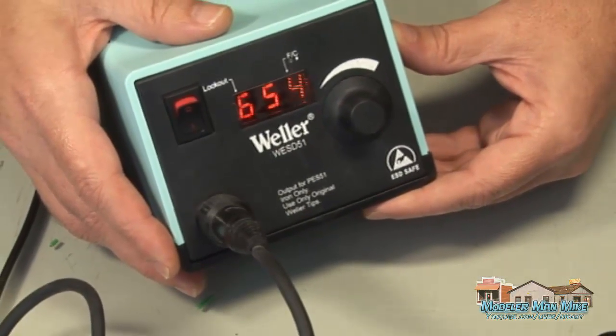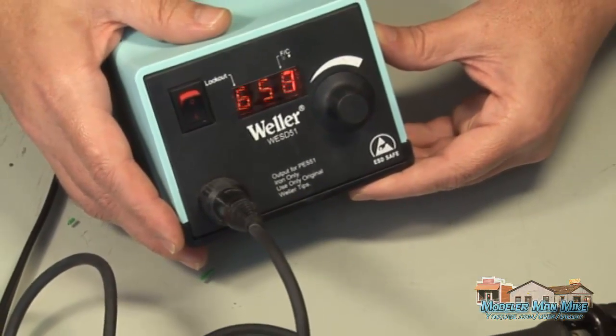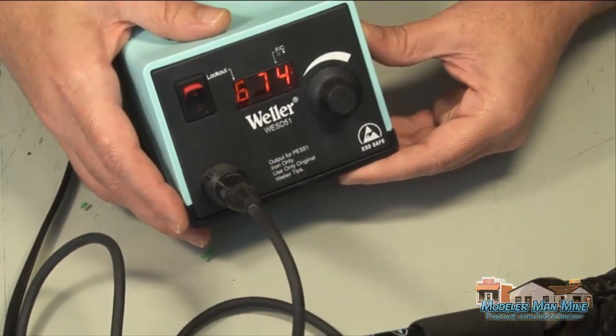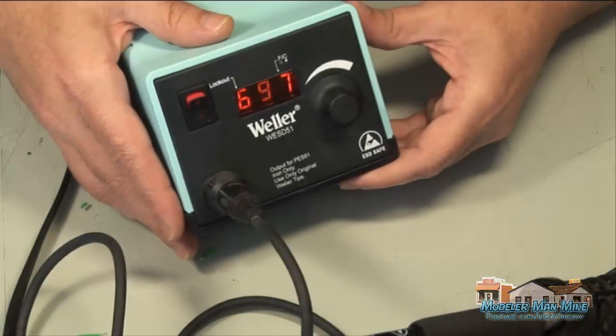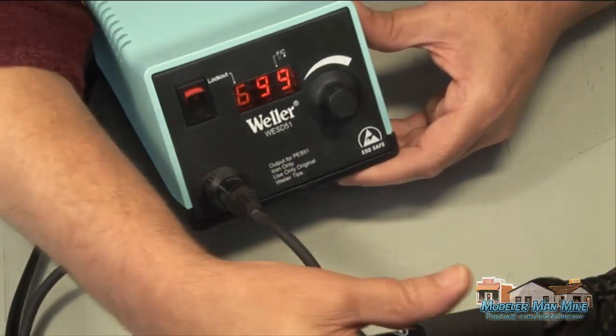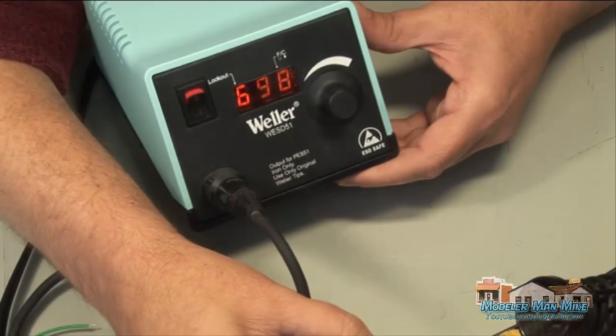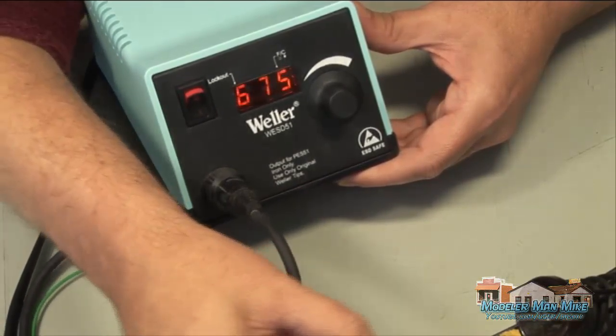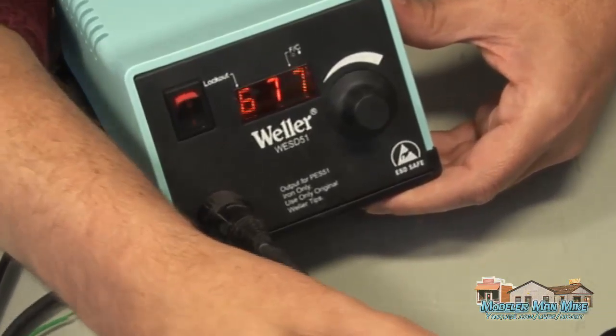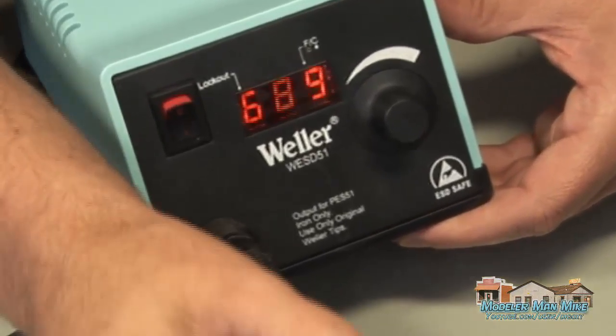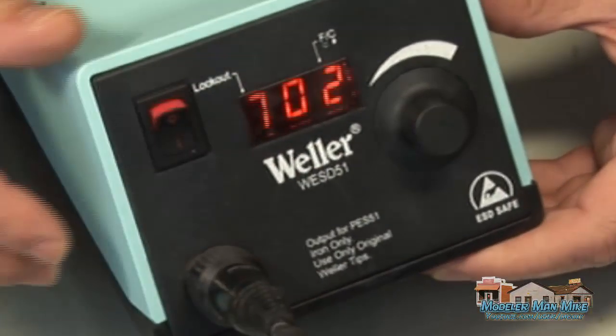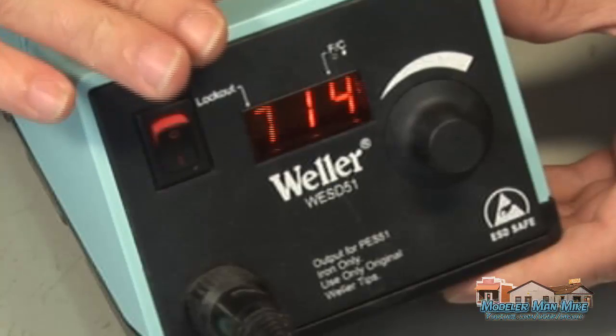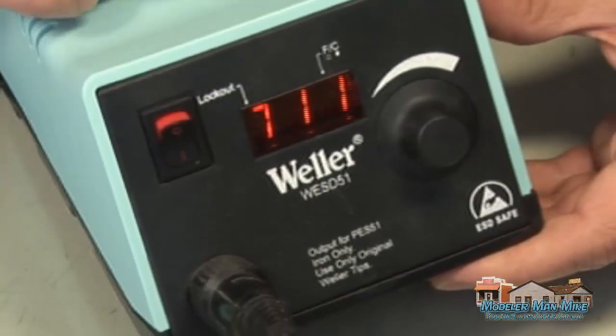One thing a lot of new people that are using soldering irons don't realize is that you do lose some temperature when you use your soldering irons. So as you go to solder, you touch something and you see the temperature come down. If you continue on it and just keep on it, you'll keep bringing the temperature down. So you really want to try and give your soldering irons time to work.